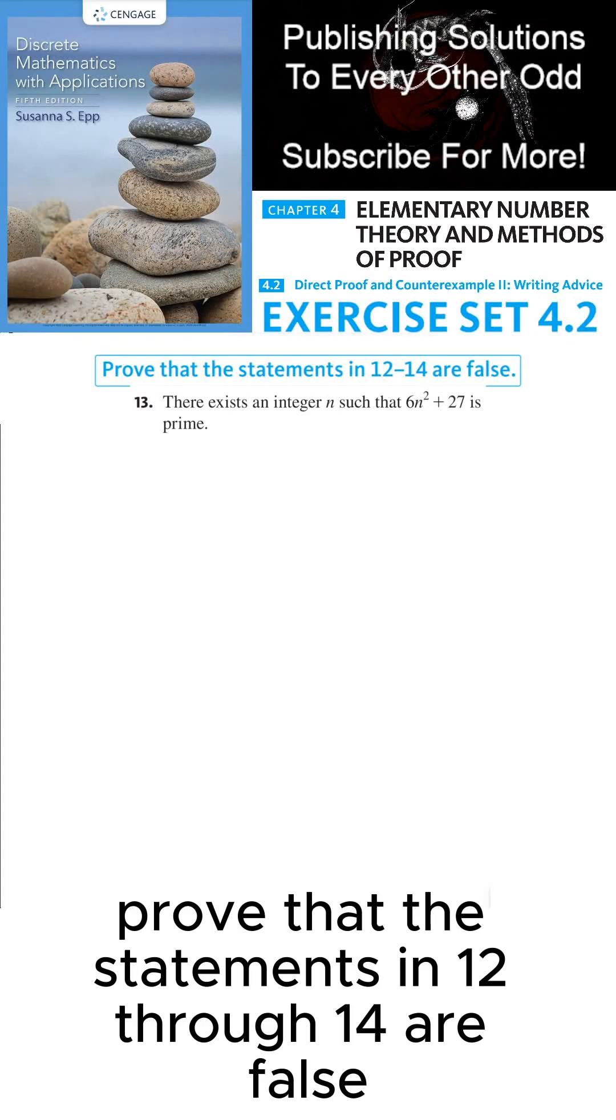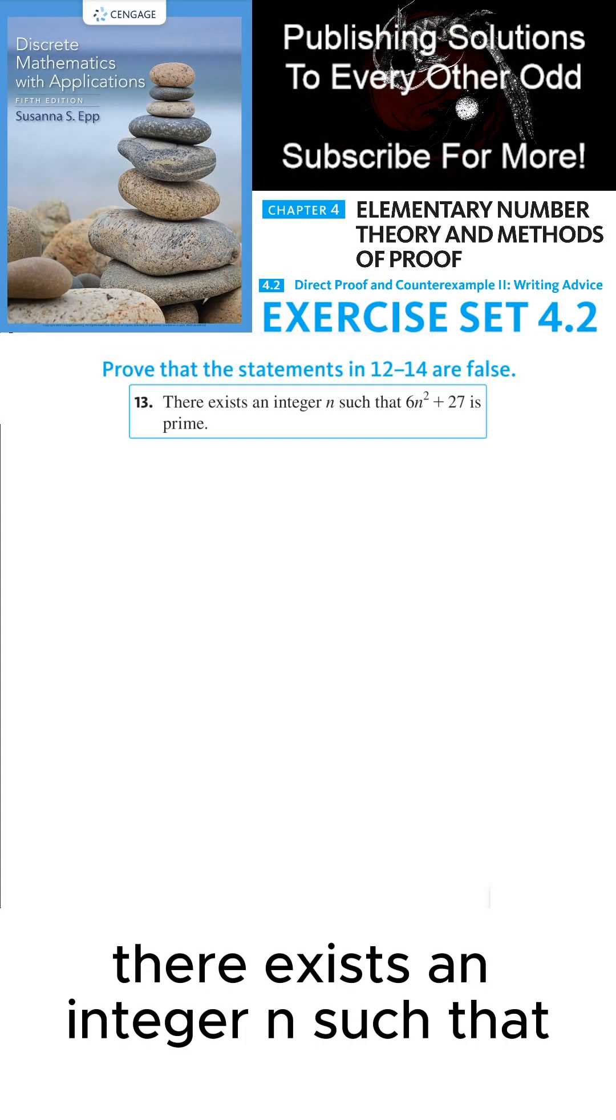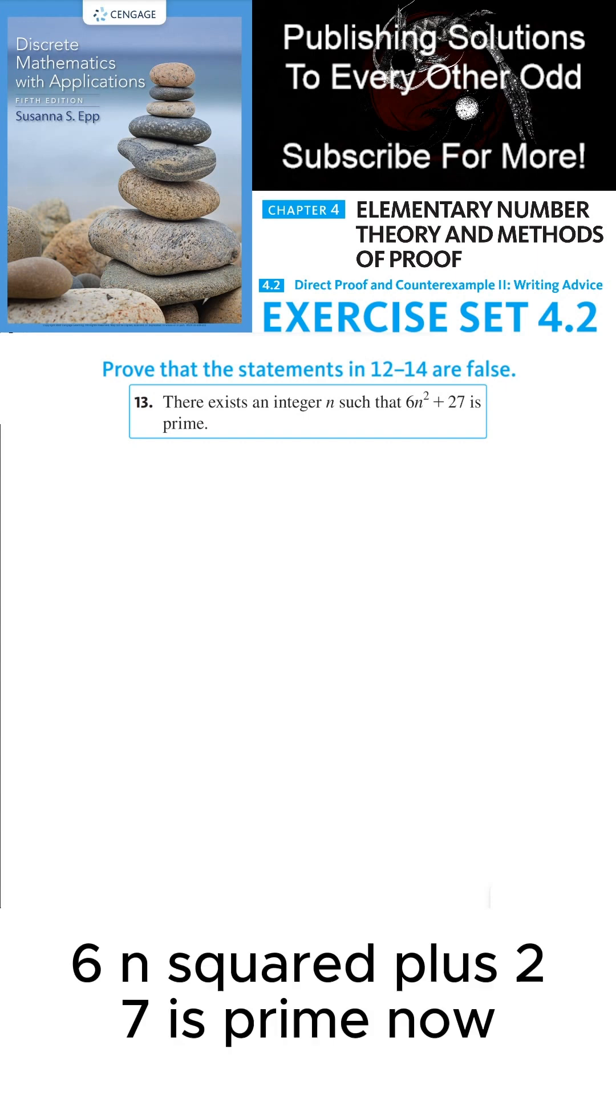Prove that the statements in 12 through 14 are false. There exists an integer n such that 6n squared plus 27 is prime.